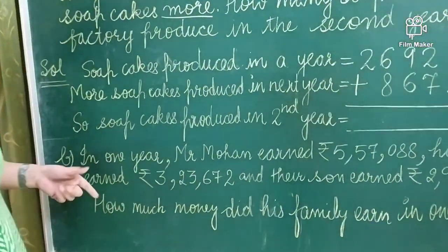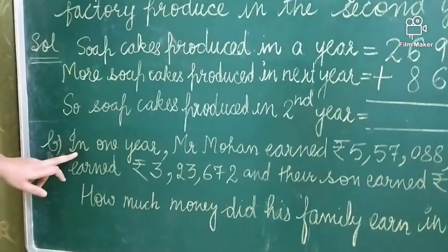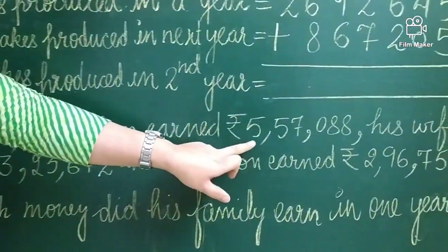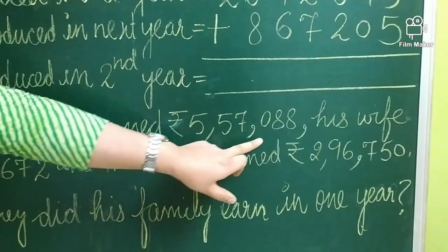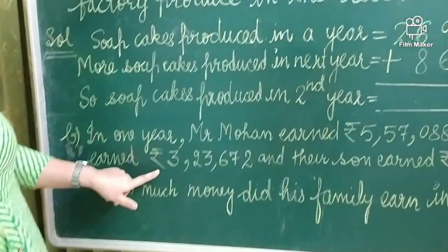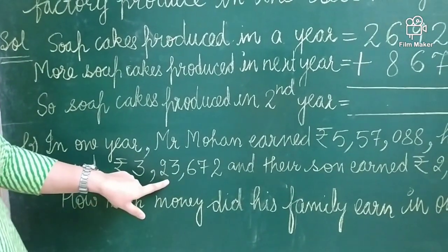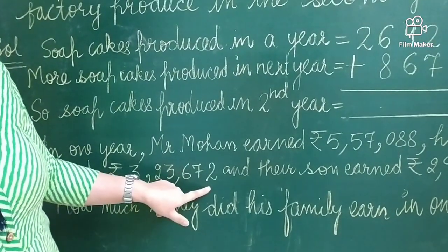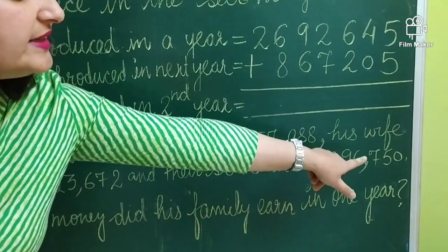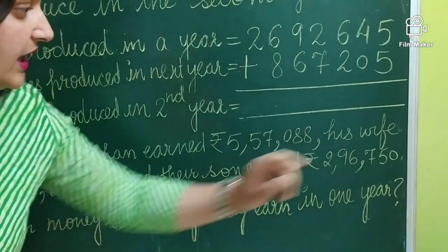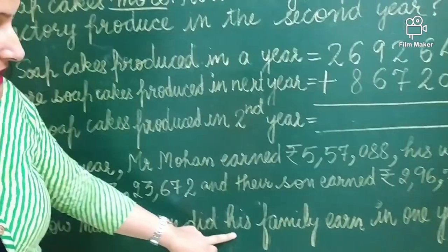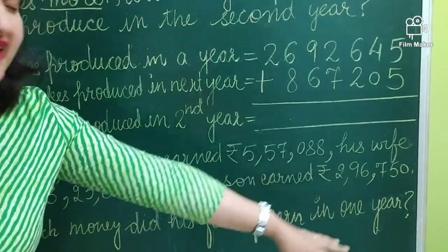Now moving to our next question. In one year, Mr. Mohan earned Rs. 5,57,088. His wife earned Rs. 3,23,672, and their son earned Rs. 2,96,750. How much money did his family earn in one year?